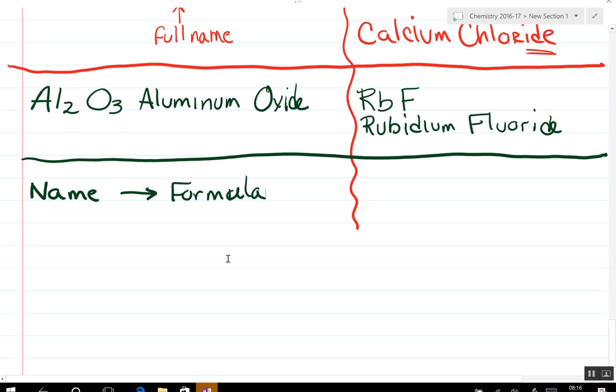Name to formula. Fluoride is F. Now, name to formula. Let's start out.